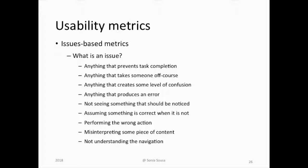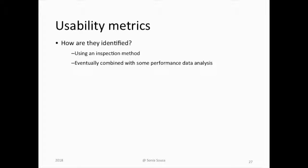Issue-based metrics capture anything that produces an error, not seeing something that should be noticed, assuming something is correct when it is not, performing the wrong action, misinterpreting content, or not understanding the navigation. This is done mainly by providing the user a set of tasks and observing if they follow what is expected or not.